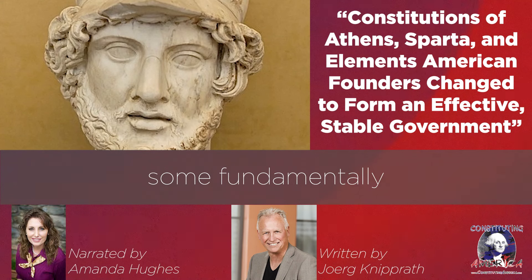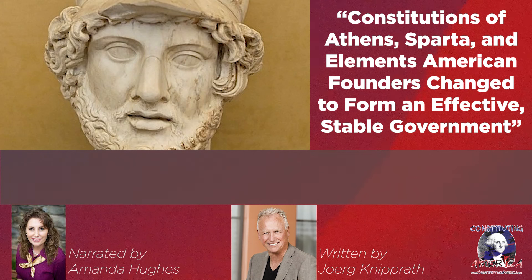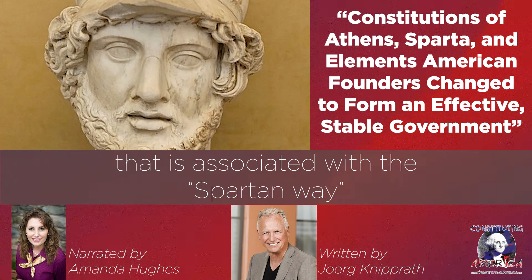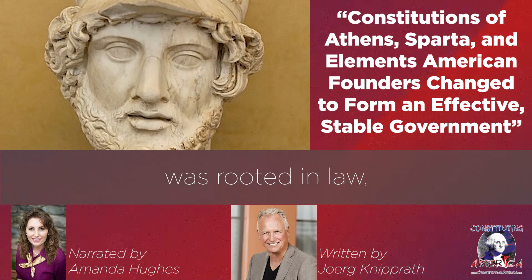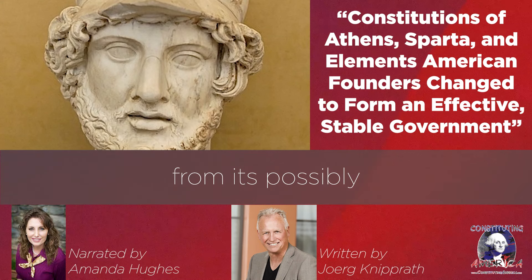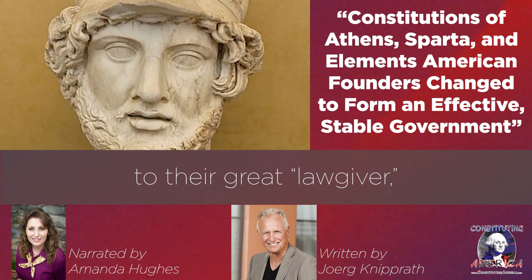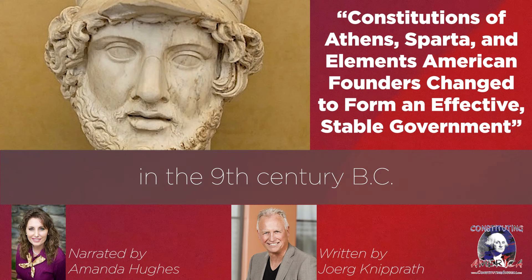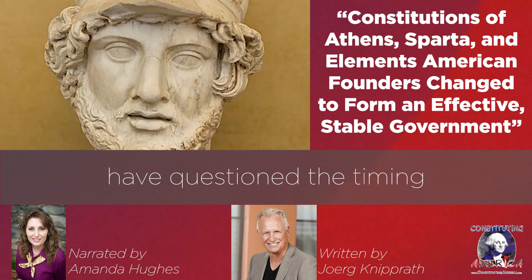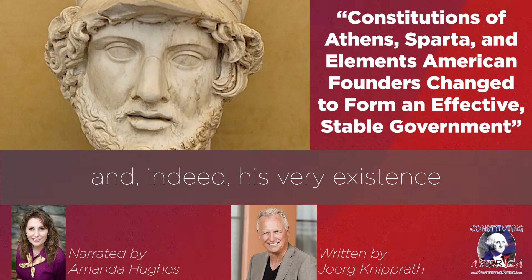The Spartan system was superficially similar to the Athenian constitution, yet was grounded in some fundamentally different social and political realities. Like some other thoroughly stratified and structured societies, Sparta was highly legalistic. The tight and intrusive control over life that is associated with the Spartan way was rooted in law, not tyrannical arbitrariness. Law, in turn, rested on tradition, not written statutes, allegedly due to a directive from its possibly fictional founder, Lycurgus. Spartans attributed the origin of their system to their great lawgiver, Lycurgus, supposedly in the 9th century B.C. Because so little is known about Lycurgus, historians have questioned the timing and, indeed, his very existence as a real person.